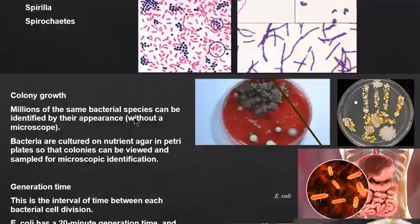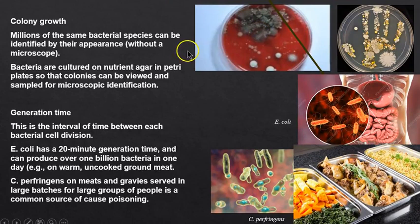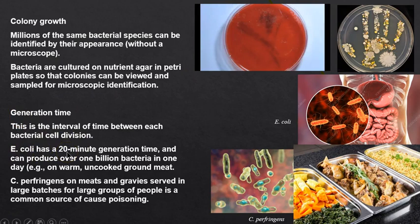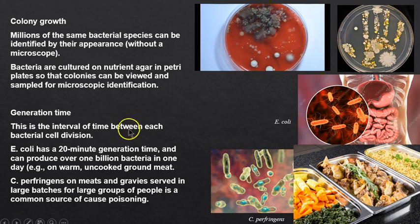This is the generation time — the rate at which bacteria multiply. Here's a time lapse: E. coli reproduces every 20 minutes, reaching 1 billion in a single day. That's why you can't leave warm food out for very long. Something like Clostridium perfringens has a generation time of 10 minutes.